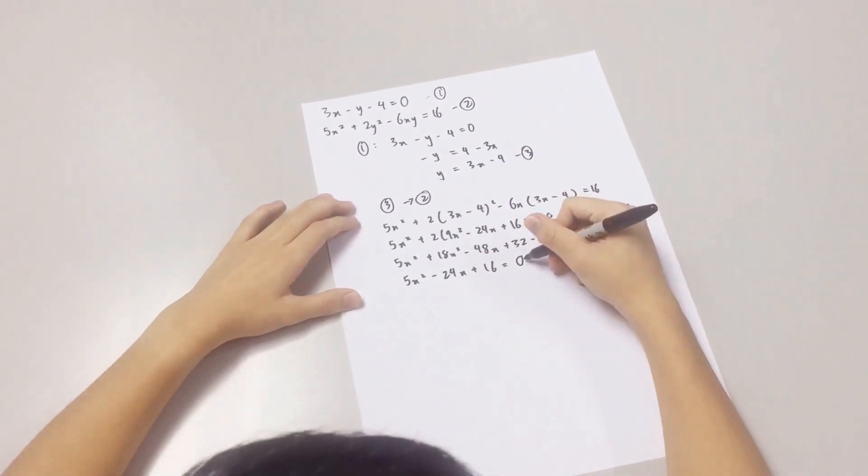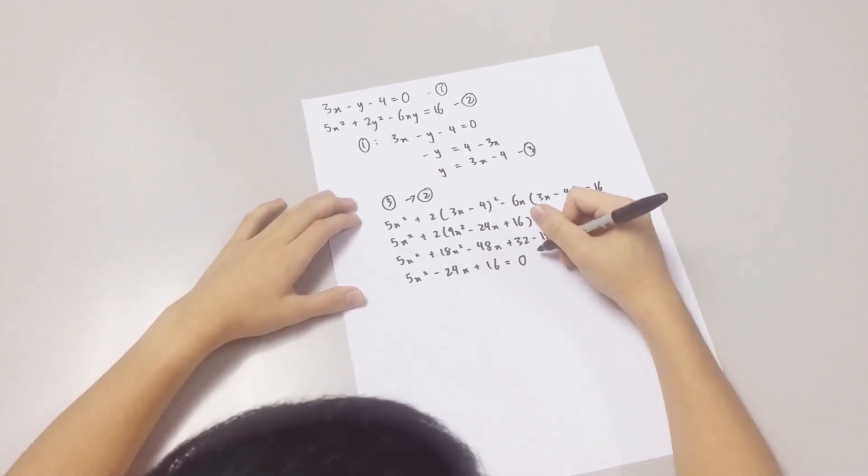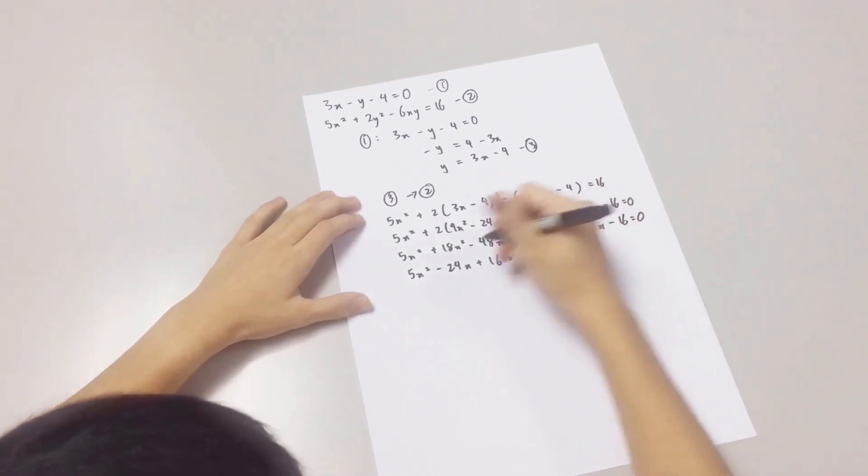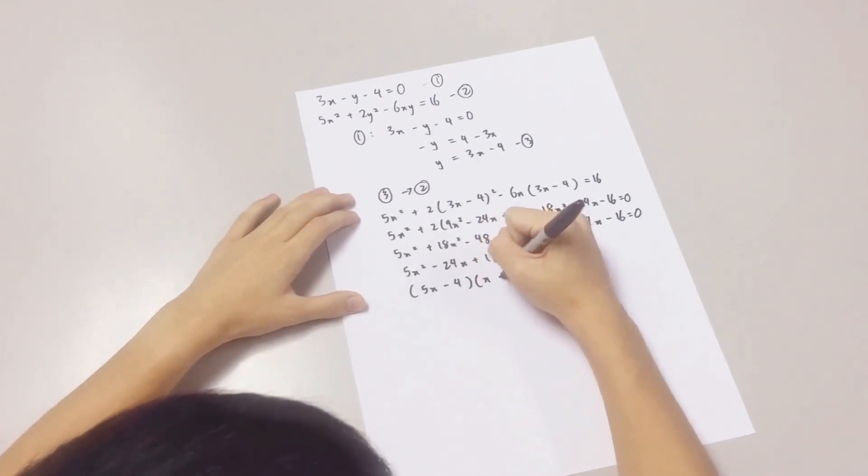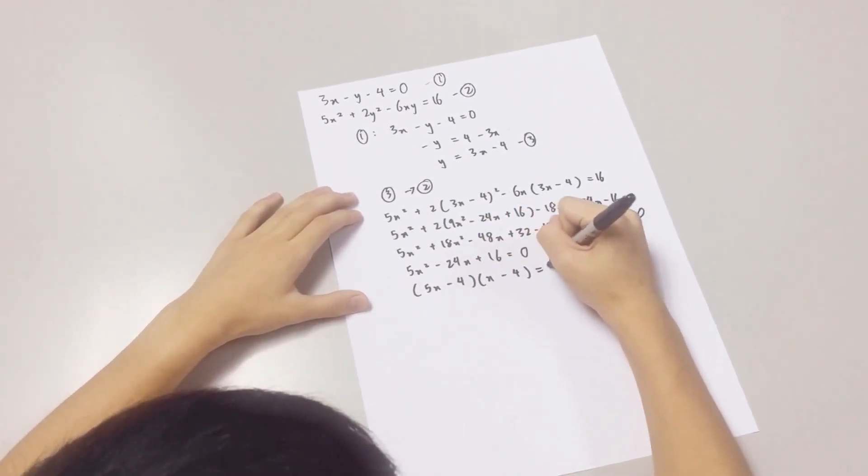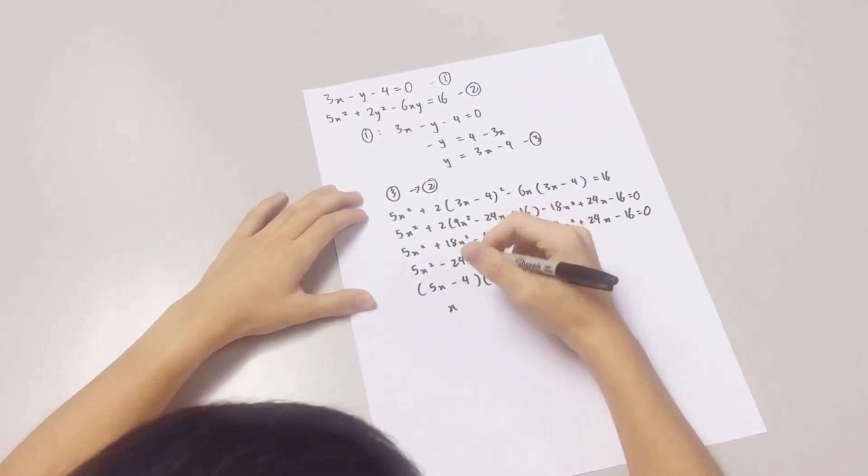And this is what is known as the general form. Now, you factorize it and you get the values of x.